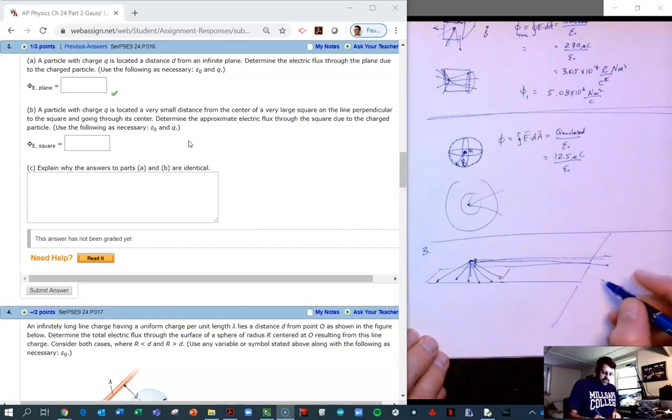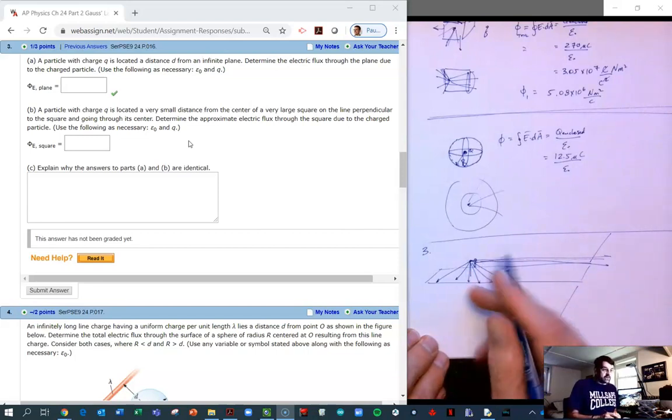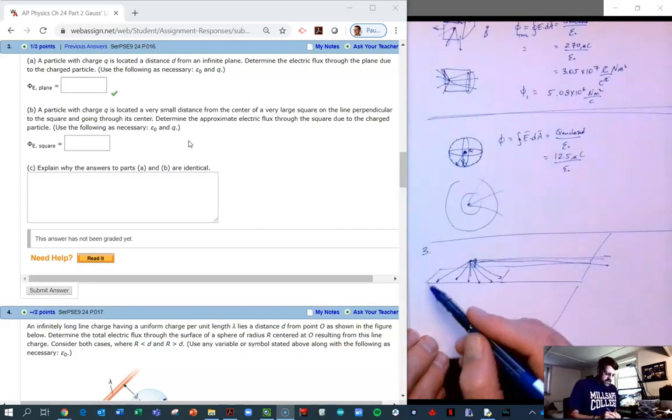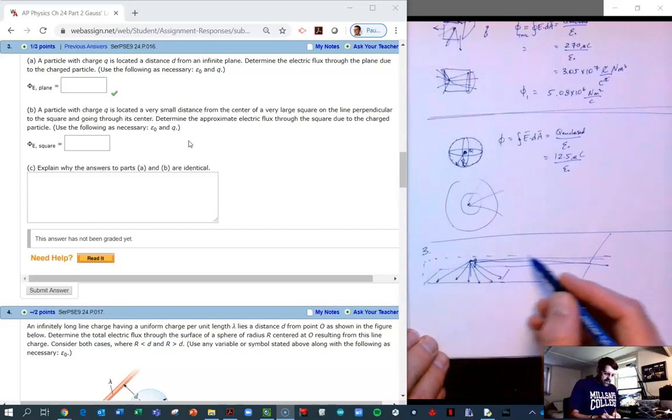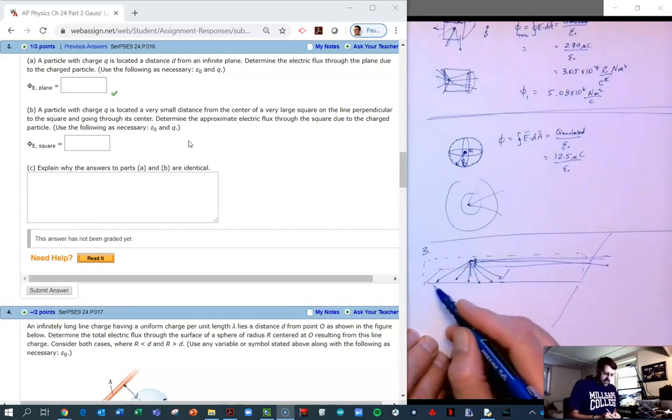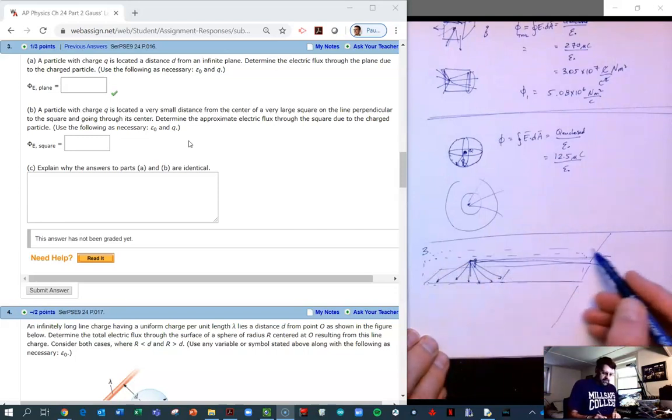So we then know that the flux is going to be half of the total flux. And as we've seen in the last two problems, the total flux would be the charge enclosed in some Gaussian surface.